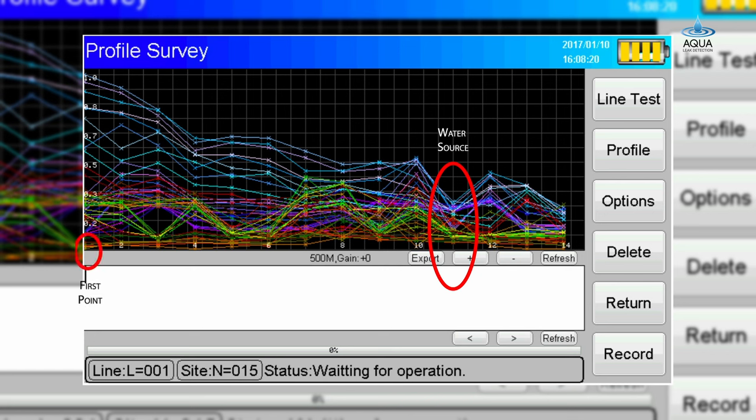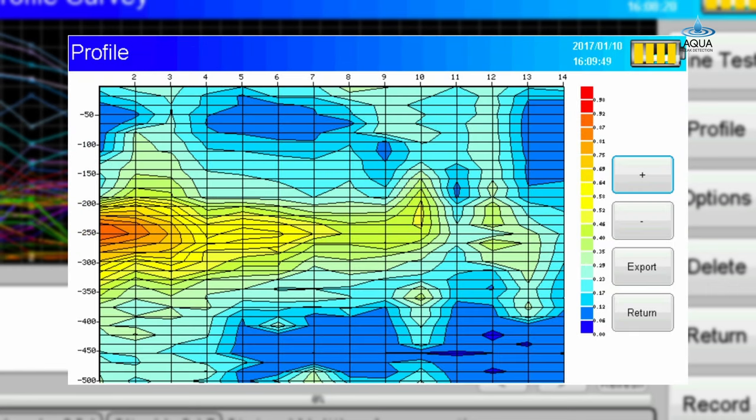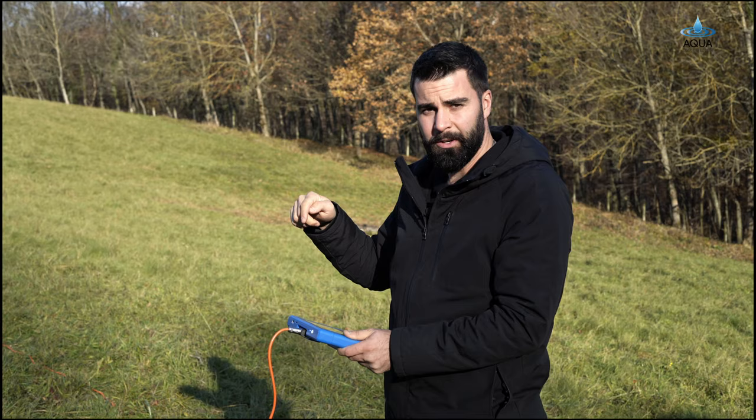As you move up one meter, the second point represents the six meter mark, and so on. So you're always representing the middle section between two rods on your profile survey.